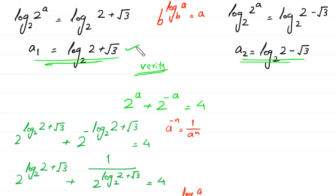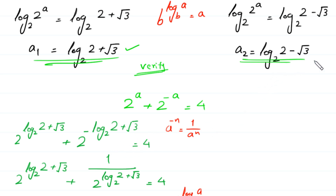Similarly, verifying a₂ equals log base 2 of (2 minus root 3) in the same way also confirms it is correct. Therefore both values are valid solutions.